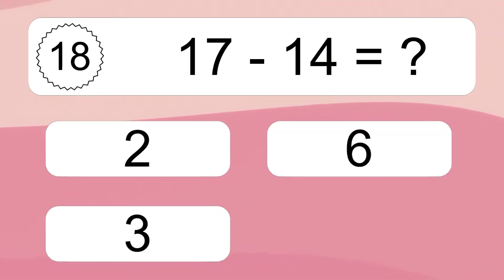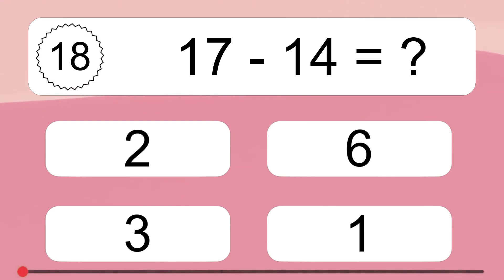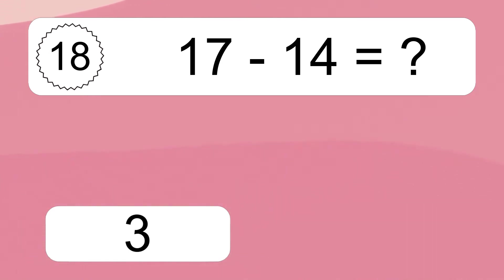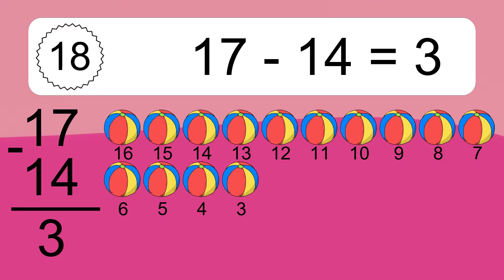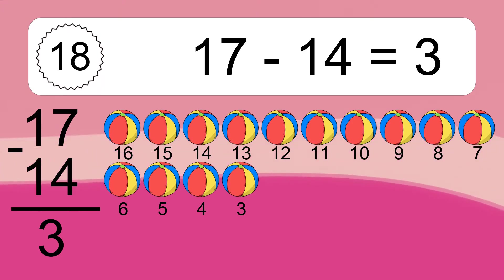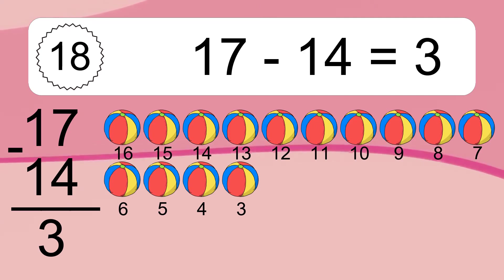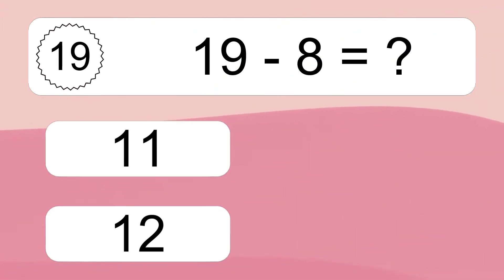17 minus 14 equals what? 17 minus 4 equals 3. Let's count it: 16, 15, 14, 13, 12, 11, 10, 9, 8, 7, 6, 5, 4, 3.